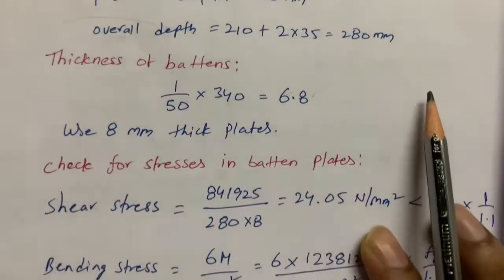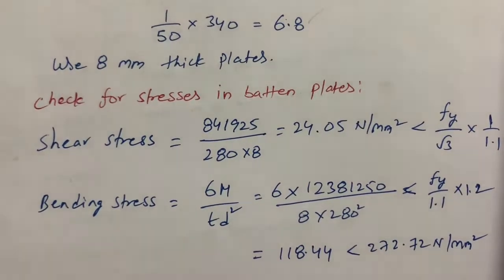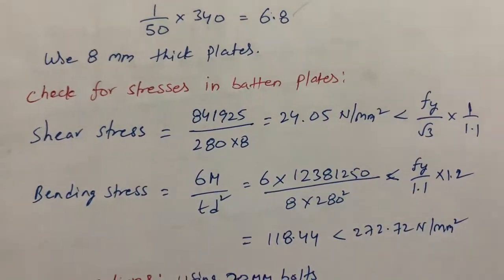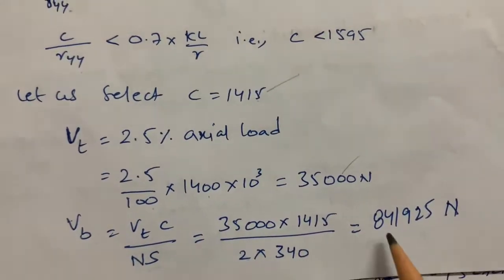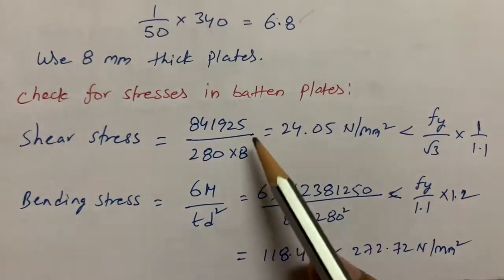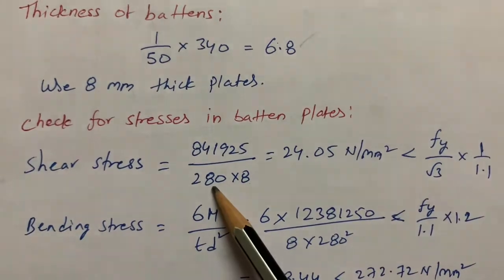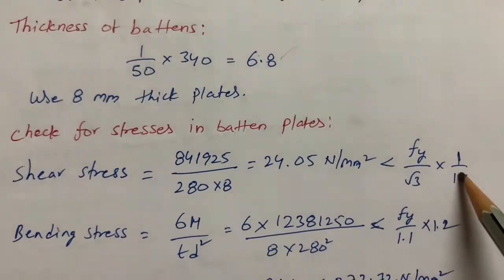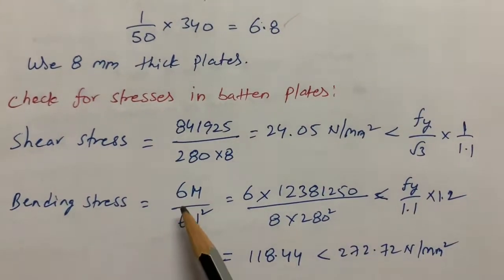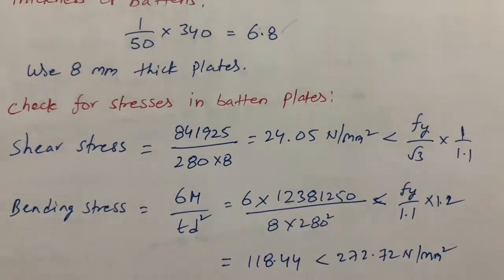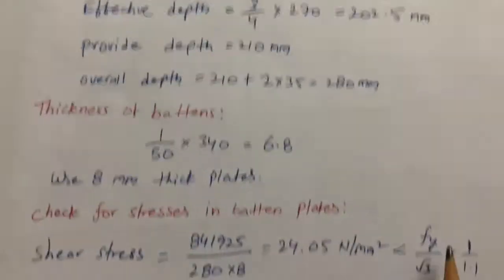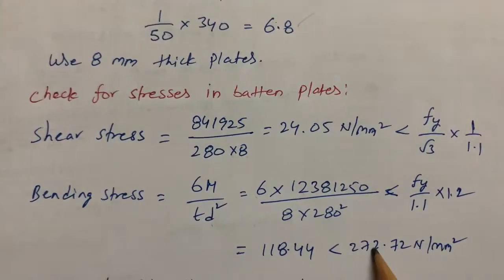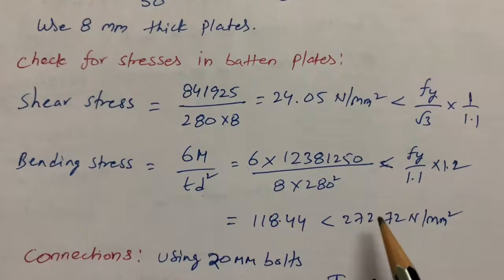Now I check the stresses in the batten plates due to the 1400 kN load. Shear stress = V_b / (280 × 8), where 280 mm is the overall depth and 8 mm is the thickness. I get 24.05 N/mm². The code requires this to be less than f_y / (√3 × 1.4) — satisfied. For bending stress, the formula is 6M / (t × d²). Using calculated M, t = 8 mm, and d = 280 mm, the result is less than 272.72 N/mm² — satisfied.